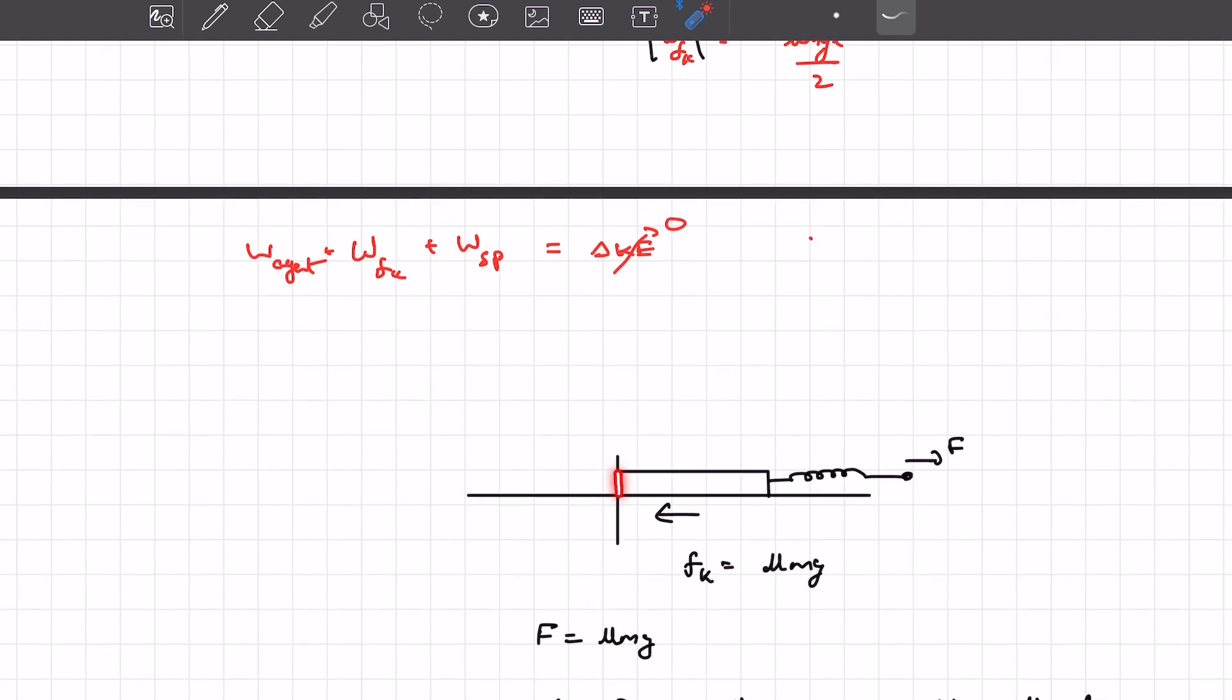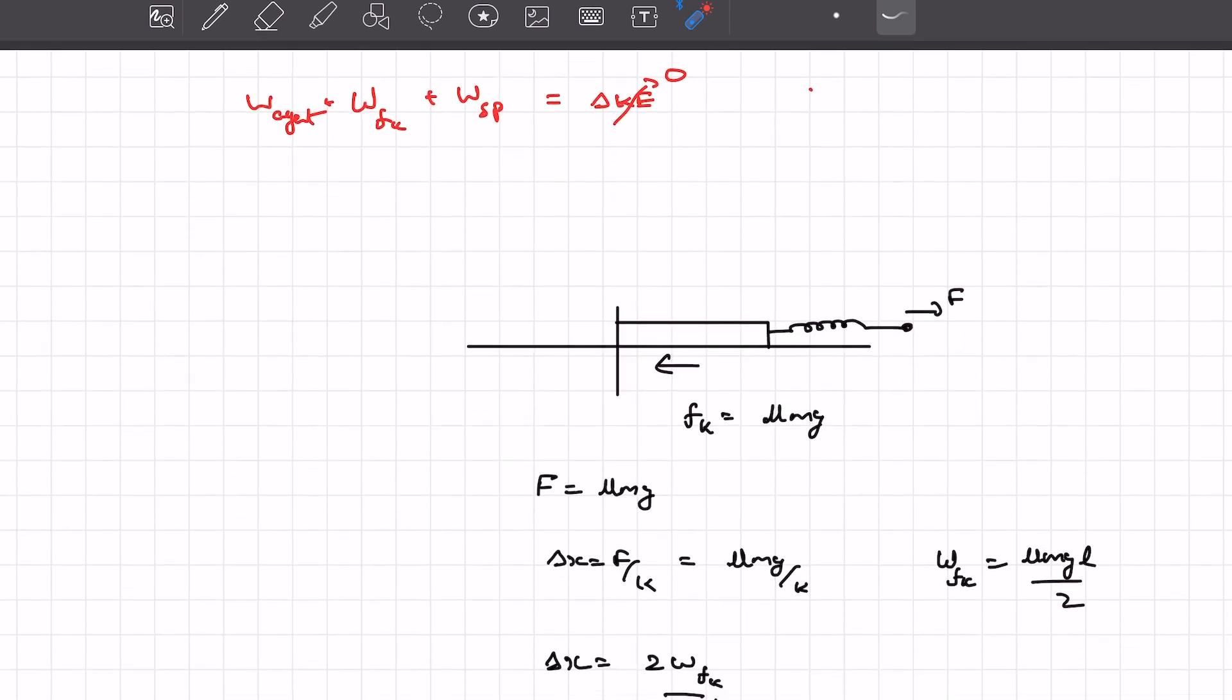So let's say after the process is complete, this entire rod is on the right side. At this instant we need to find the delta X in the spring. For that, as I said earlier, this force F would be just equal to the kinetic friction at that case.